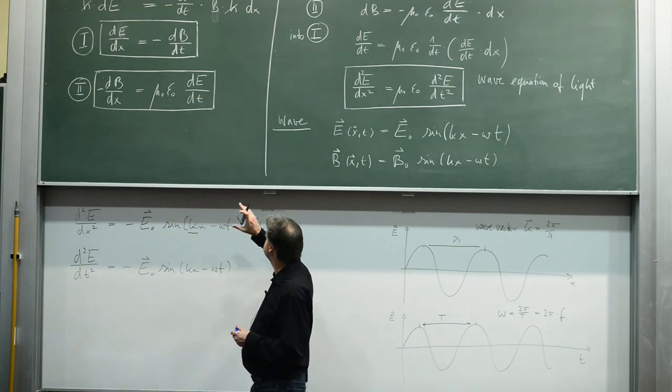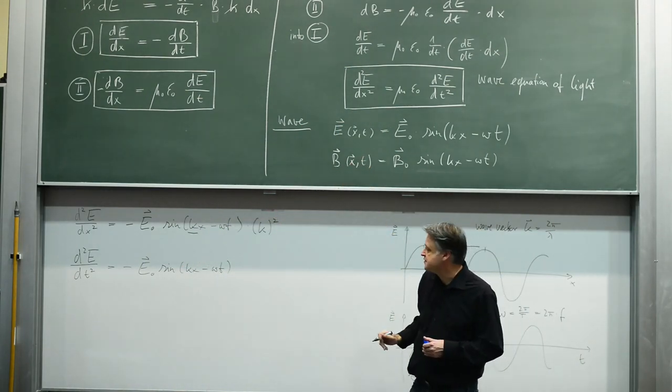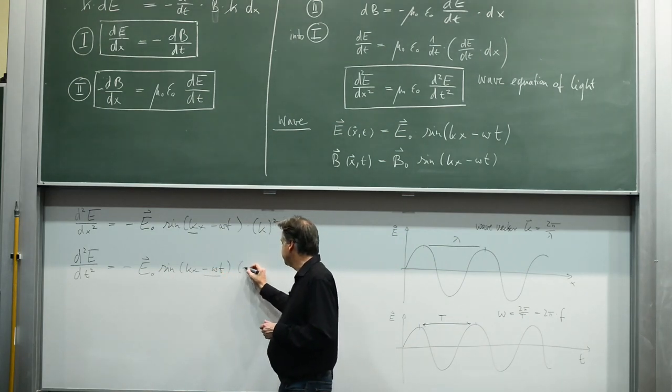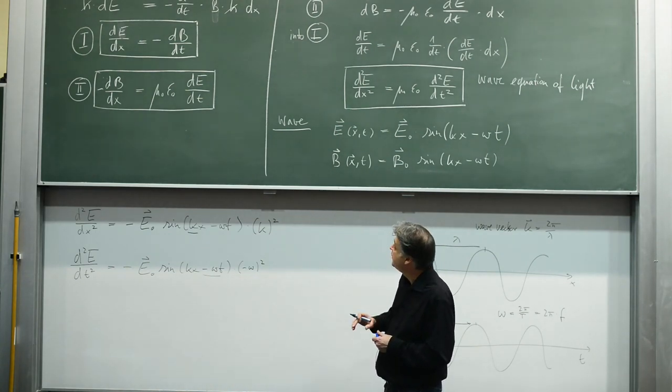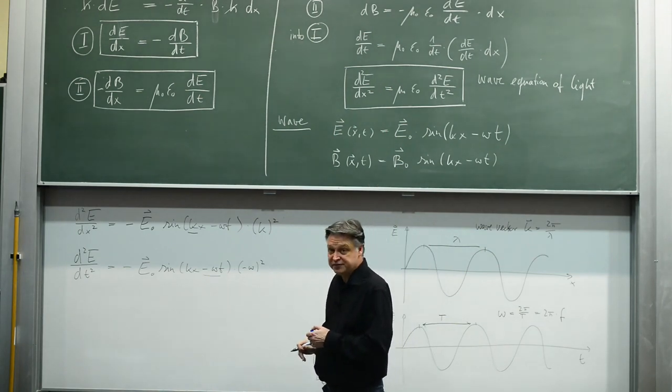d squared E by dt squared is minus E0 sin(kx minus omega t). Derivative of a sinus gives cosine, and then minus sinus. Don't forget the inner derivative, and we have to do that twice. So minus omega squared.